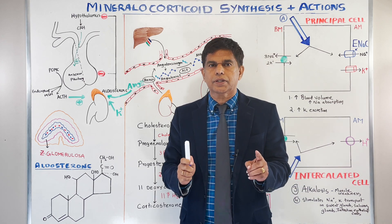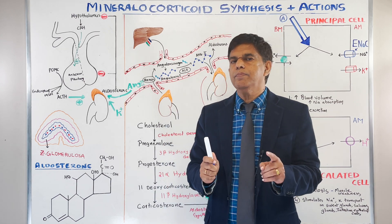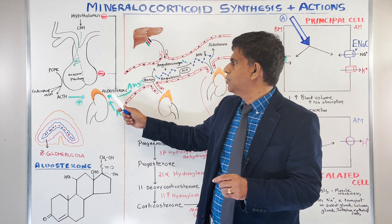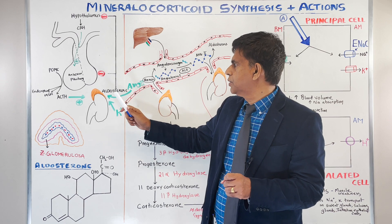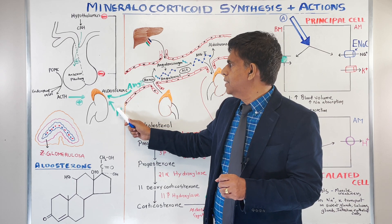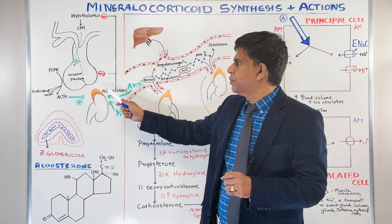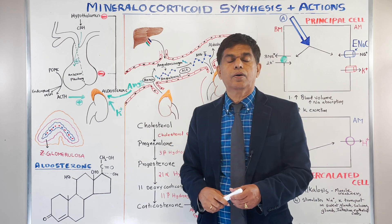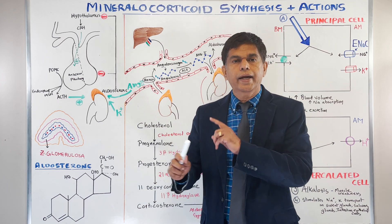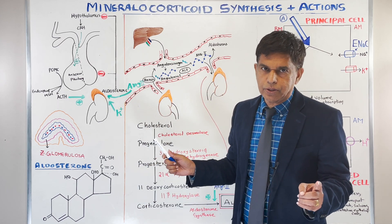ACTH does not control the rate of secretion of aldosterone. The other two major mechanisms are angiotensin II and potassium in the production of aldosterone. We're going to teach you all about aldosterone and how angiotensin II and potassium stimulate its production.